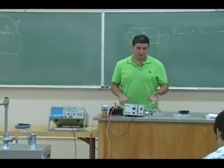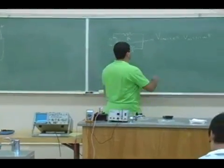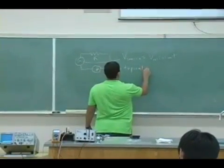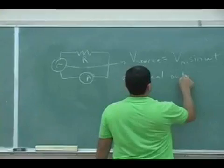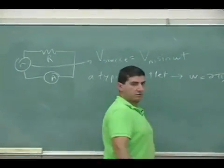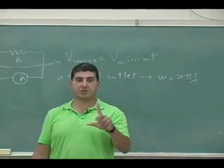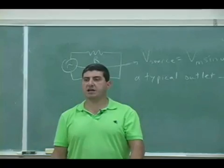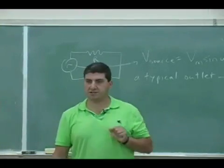If I use a typical source, what's the omega of the typical source hooked up to this? What's the omega and the V_max? So a typical outlet, the omega is going to be 2πf, and the f is going to be 60 cycles per second.